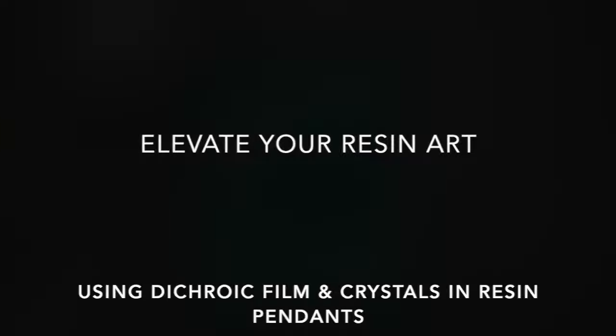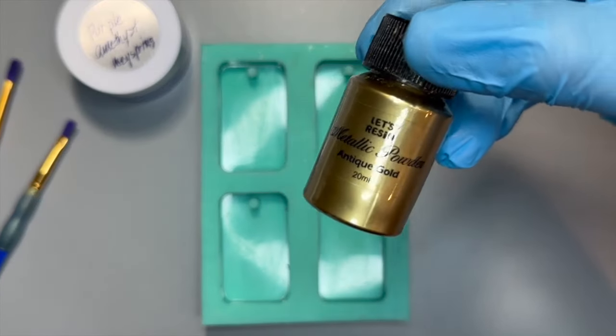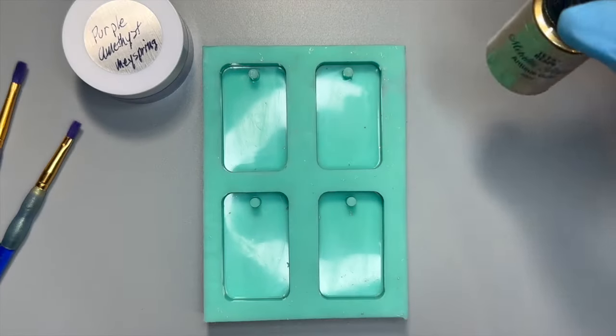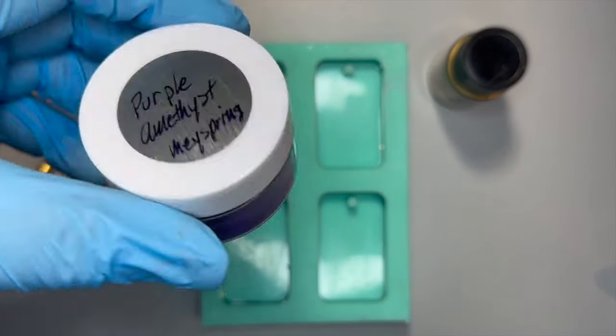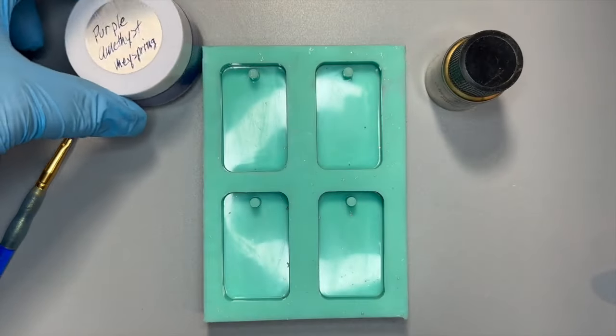This video is about using dichroic film and crystals in resin pendants. I should have started these as two separate videos, but for some reason I did two different types of pendants in the same pour.